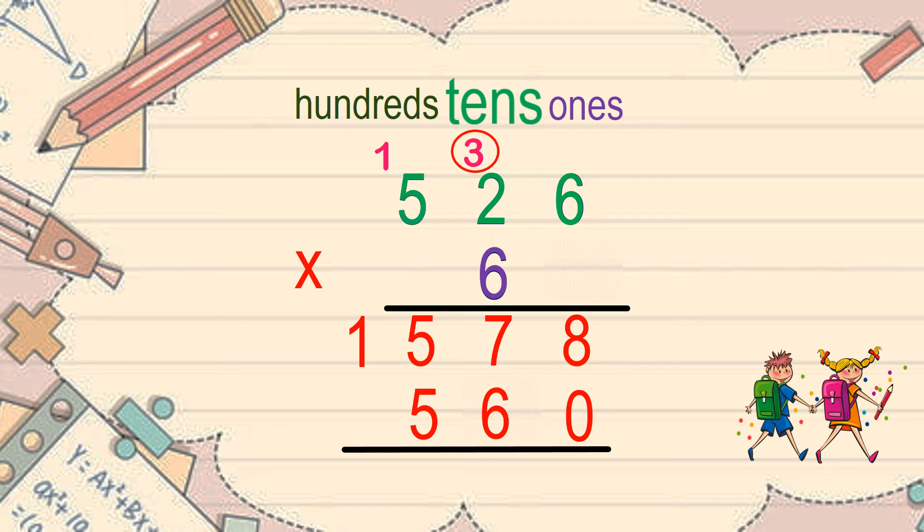Then we have 5 times 6 equals 30 plus 1. That makes 31. And because there's no other digit to multiply with, there's no need to carry 3 over. So just pull it back down.